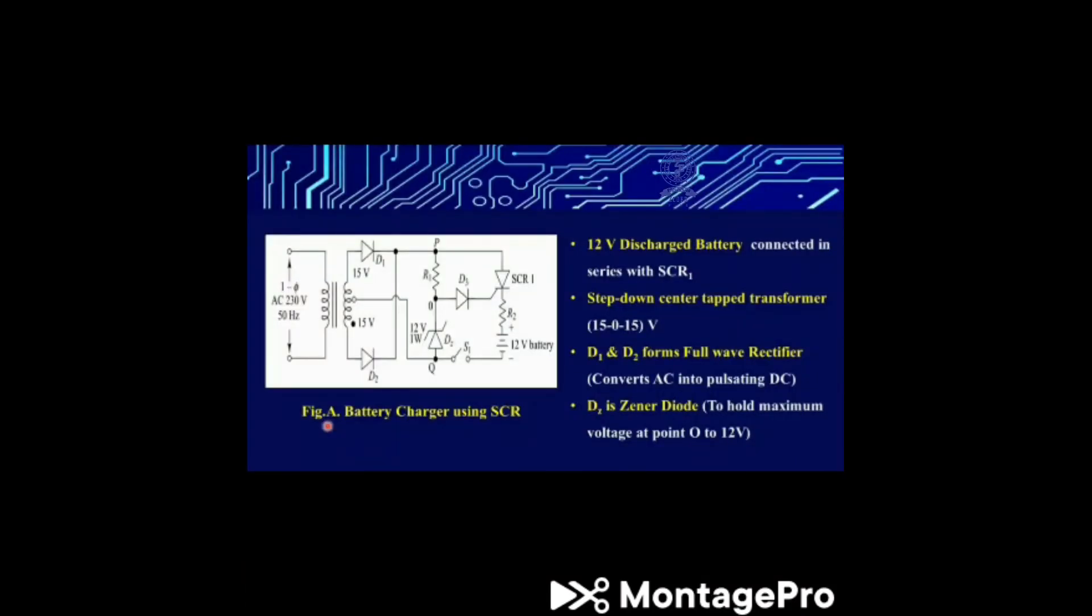Now we are going to see the circuit and function of the battery charger. Here we can see the 12V battery connected in series with SCR1 and a step-down center-tap transformer. D1 and D2 form a full-wave rectifier which converts AC into pulsating DC. DZ is a Zener diode used to hold maximum voltage at point O2.